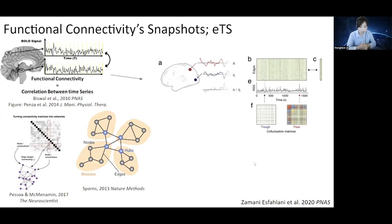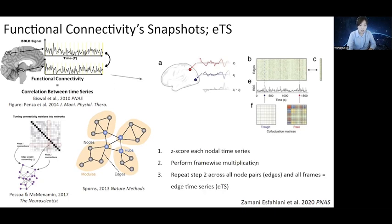In 2020, Fernand Zamani Esfahani and colleagues took the time series of fMRI data and created an edge time series by performing frame-wise multiplications of the nodal time series. So in short, the process of creating edge time series is as follows: you take the nodal time series of a node, you can z-score them, and perform a frame-wise multiplication from a pair of nodes, and repeat the step across all node pairs for edges, and across all frames.